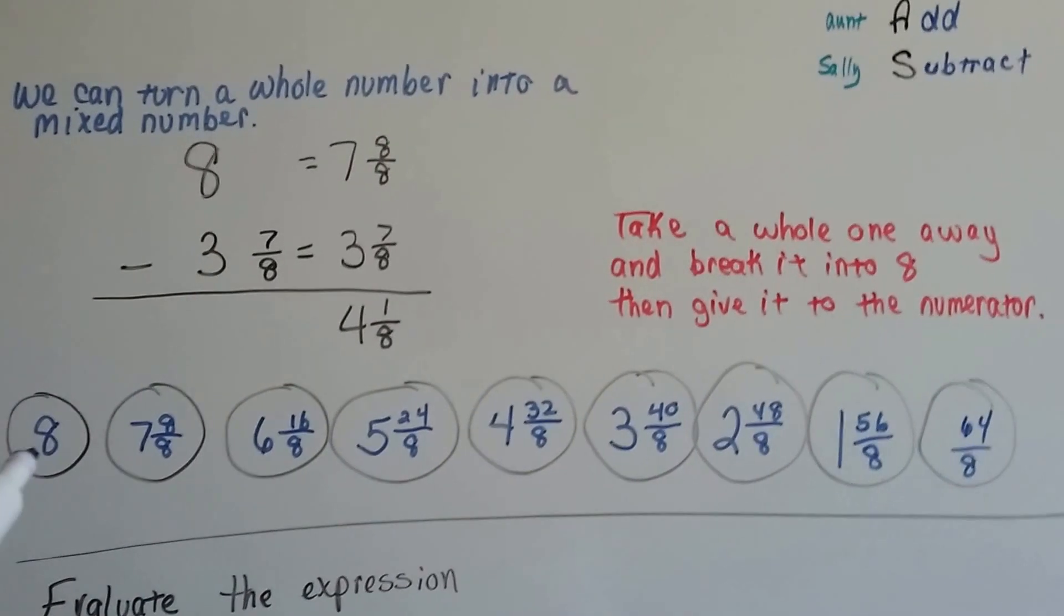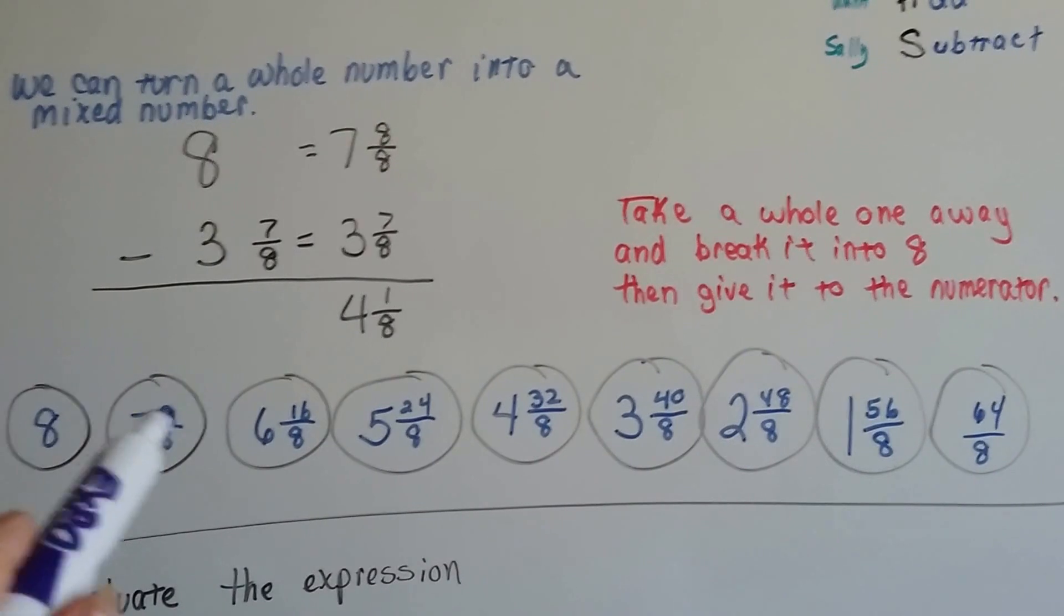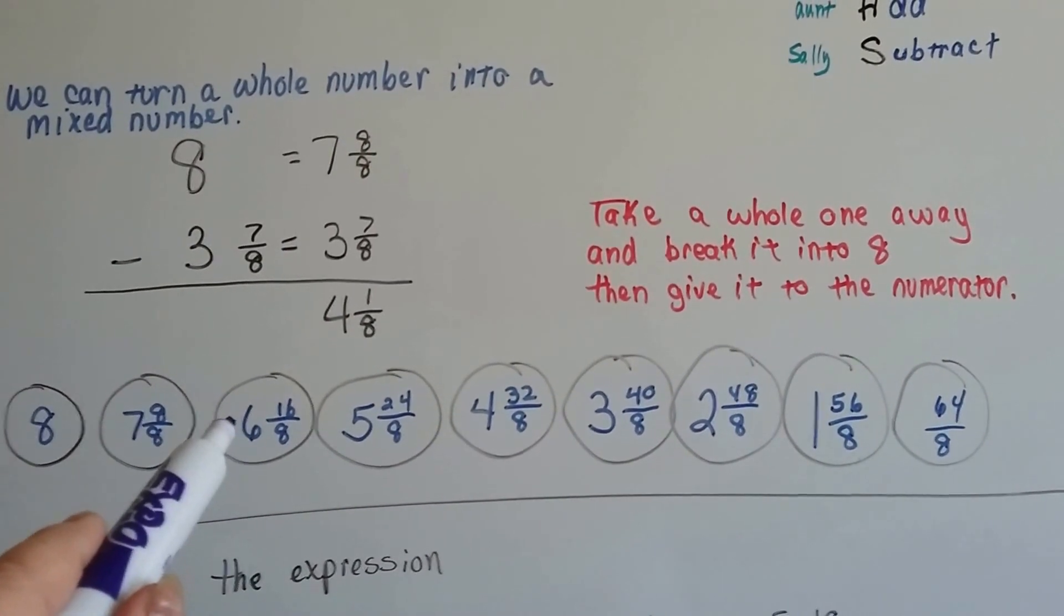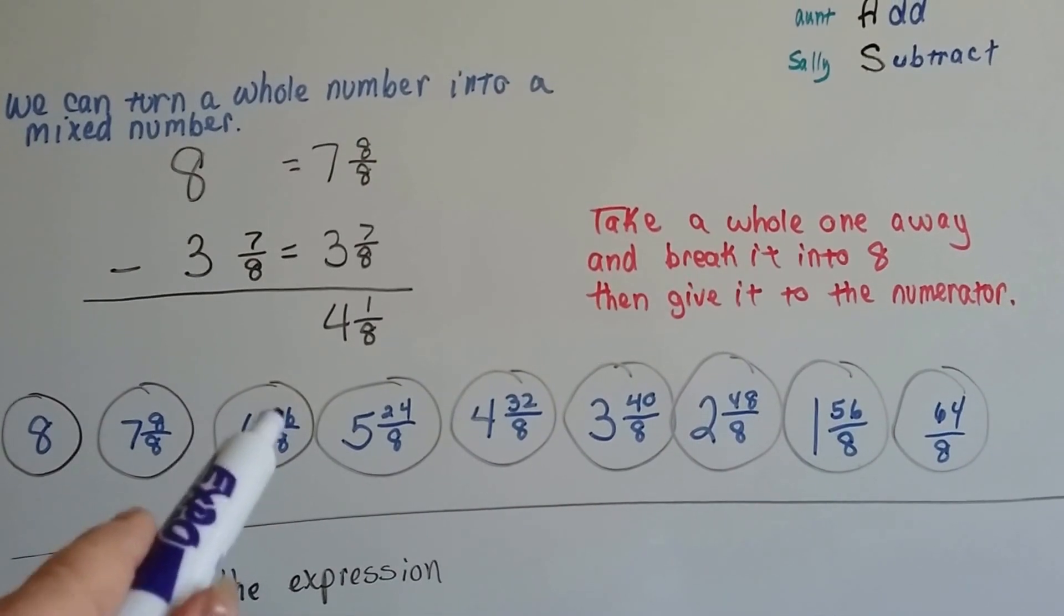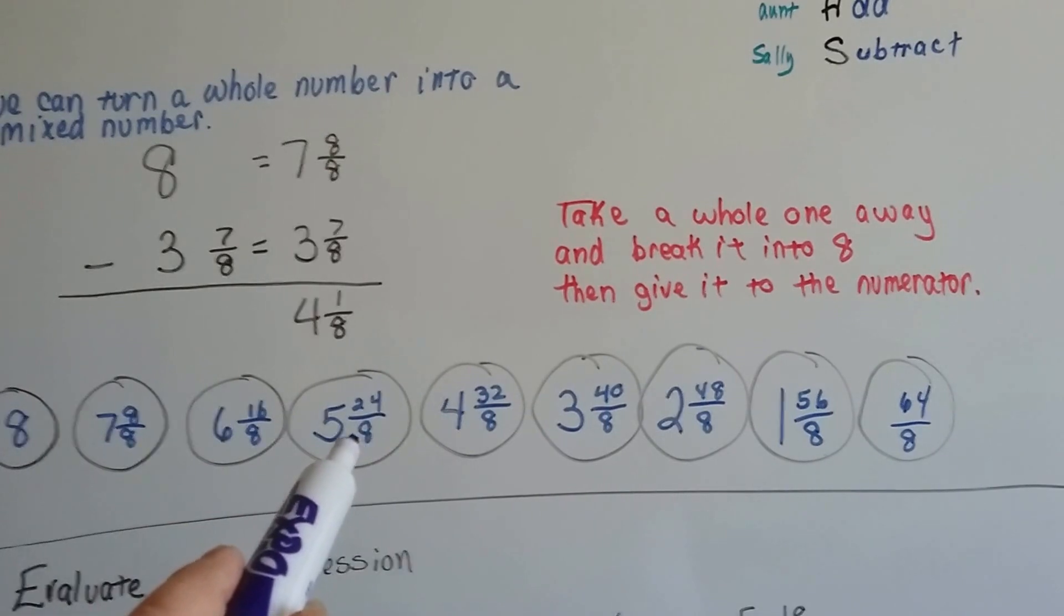So if you look, these all equal 8. We have an 8. We have an 8. Then we have 7 and 8 eighths, that's 8. It's a 7 and 1 more, that's 8. We have 6 and 16 eighths. Believe it or not, that's 8. These are all 8.